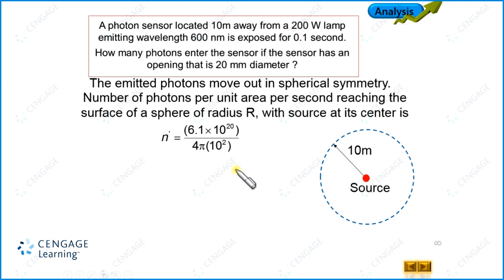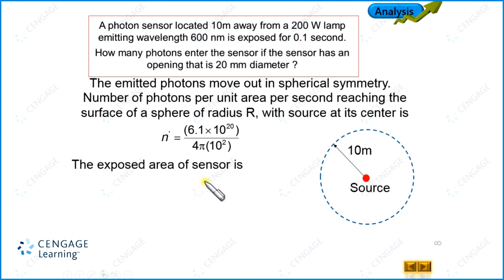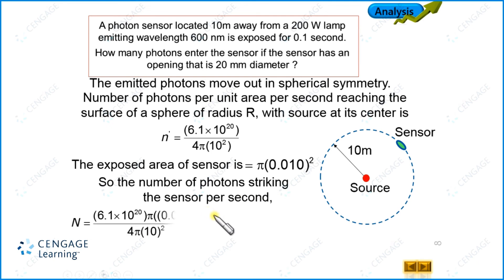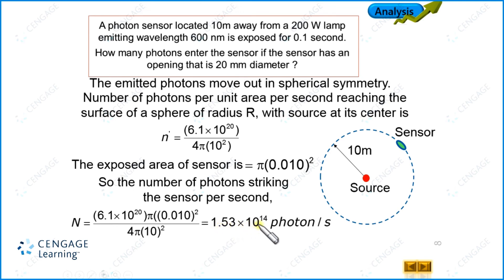We know the area of the sensor because the diameter is given. Area of the sensor equals π × (d/2)², where d/2 = 10 millimeters = 0.01 meters. Multiplying the photon flux by the exposed area of the sensor — pi and pi cancel — we get the number of photons striking the sensor per second as 1.53 × 10¹⁴ photons per second.